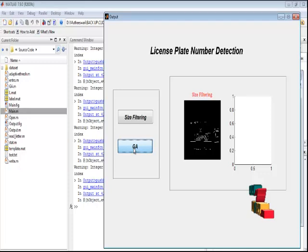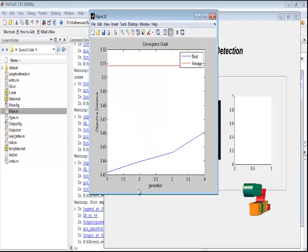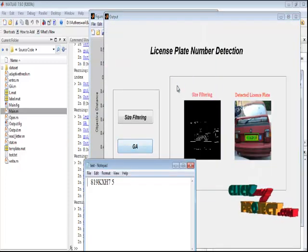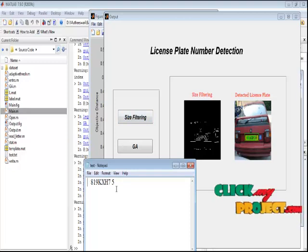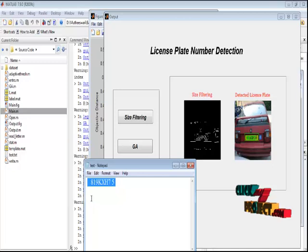By pressing the genetic algorithm button, we can perform the genetic algorithm operation which provides the optimized result. Based on the optimized result, we perform the license plate number detection. This is the graphic representation for the graph. Average values are moved to the best value. This is the license plate number written in notepad format.